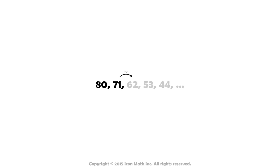71 minus 9 is equal to 62. Similarly, 62 minus 9 equals 53, and 53 minus 9 is equal to 44. We can conclude that to get the next number in this pattern, we need to subtract 9 from the previous number.